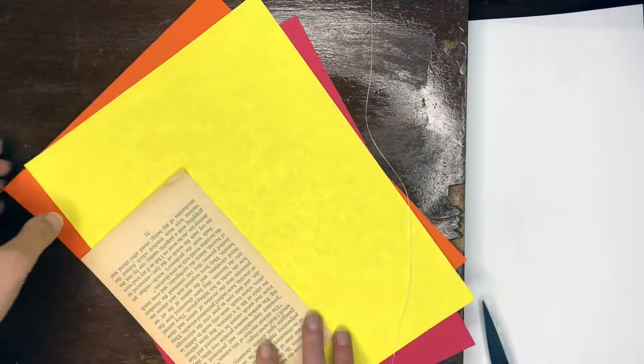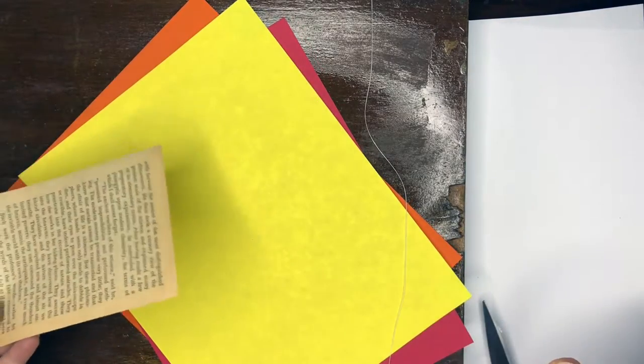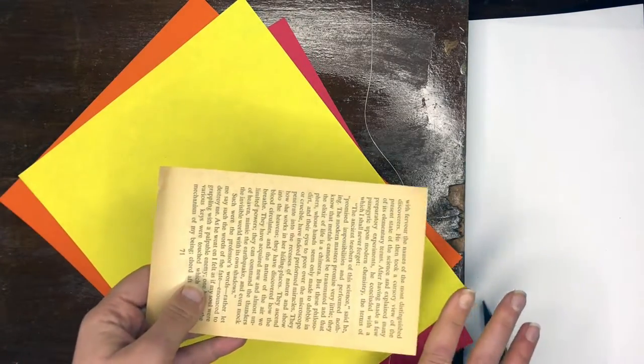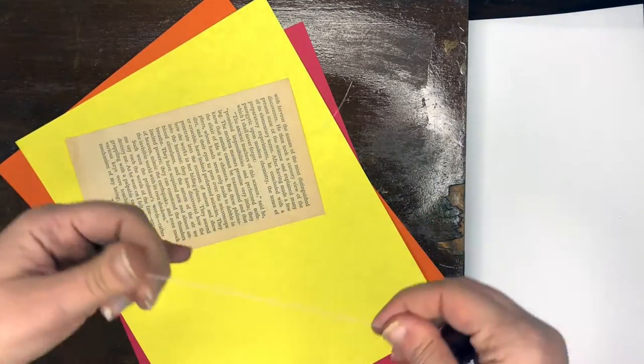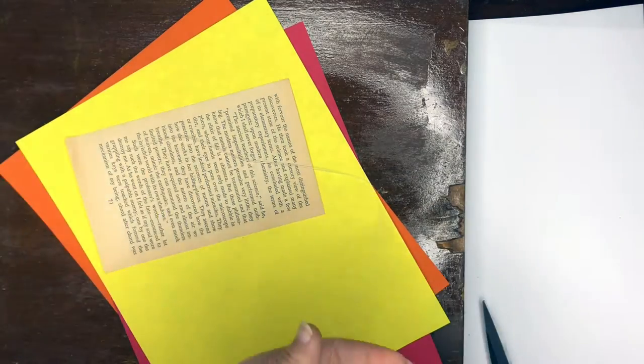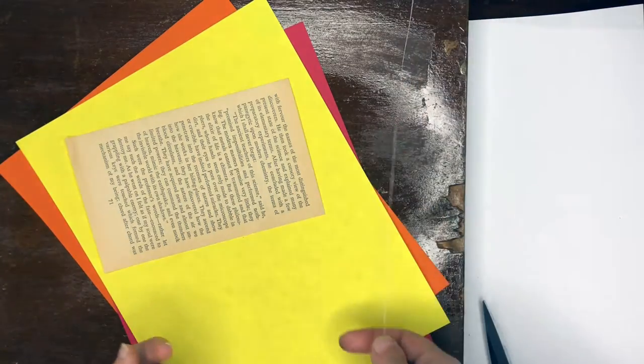For this paper mobile, all you're going to need is some colored paper or some art paper that you don't want anymore that you want to cut up, old art, an old book like my book that's falling apart, I use it all the time, and a piece of string or thread or yarn.